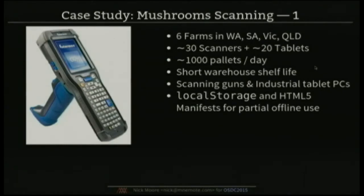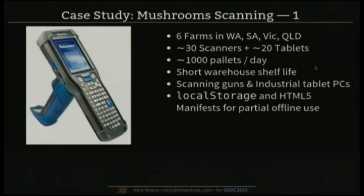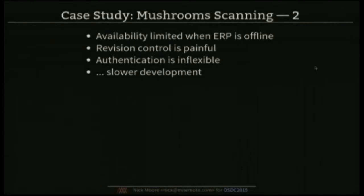You're also stuck with the built-in revision control, authentication methods, and all of that sort of stuff, which can be a little inflexible. This is actually the architecture used by the project I've just finished — running over six farms around the country, 30 scanning devices, about 20 tablet devices, moving about 1,000 pallets of stock a day. The stock is mushrooms, which have a shelf life in the warehouse of about three days, so logistical mistakes are extremely expensive. The application uses local storage and HTML5 manifests to work partly offline, but bumps into problems with how the authentication system works offline.